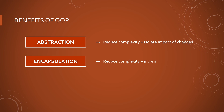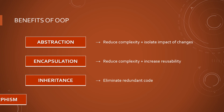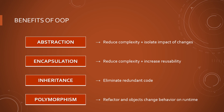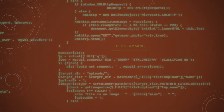Here are the benefits of object-oriented programming. Using abstraction, we hide details and complexity and show only the essentials — this reduces complexity and isolates the impact of change in the code. With encapsulation, we group related variables and functions together, reducing complexity and enabling code reuse. With inheritance, we eliminate redundant code. And with polymorphism, we can refactor objects and change behavior at runtime.